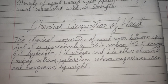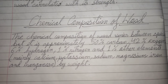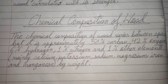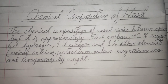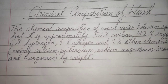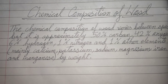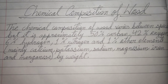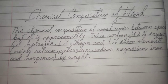The chemical composition of wood varies between species, but it is approximately 50% carbon, 42% oxygen, 6% hydrogen, 1% nitrogen, and 1% other elements, mainly calcium, potassium, sodium, magnesium, iron, and manganese by weight.